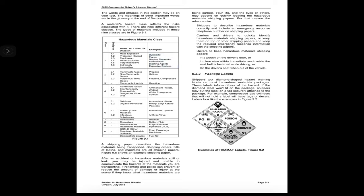Figure 9.2 lists hazardous materials classes and examples: mass explosion, projection hazard, fire hazard, minor explosion, very insensitive, extremely insensitive — including dynamite, flares, display fireworks, ammunition, blasting agents, explosive devices, flammable gases, non-flammable gases, poisonous/toxic gases such as propane, helium, fluorine, compressed gases, flammable liquids, and other materials. A shipping paper describes the hazardous materials being transported; shipping orders, bills of lading, and manifests are all shipping papers.